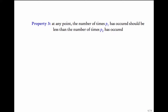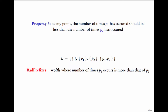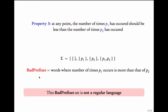Let's look at another property which says that at any point the number of times P1 has occurred should be less than the number of times P2 has occurred. What would bad prefixes for this be? Bad prefixes are words where the number of times P1 occurs is more than that of P2. The moment you see a word where the number of times P1 occurs is more than P2, that will be a bad prefix. This set of bad prefixes is not a regular language. We had seen a similar example of a^n b^n where we had to keep a count. Here we need to keep a count of the number of times P1 has occurred and this cannot be done using a finite state automaton.